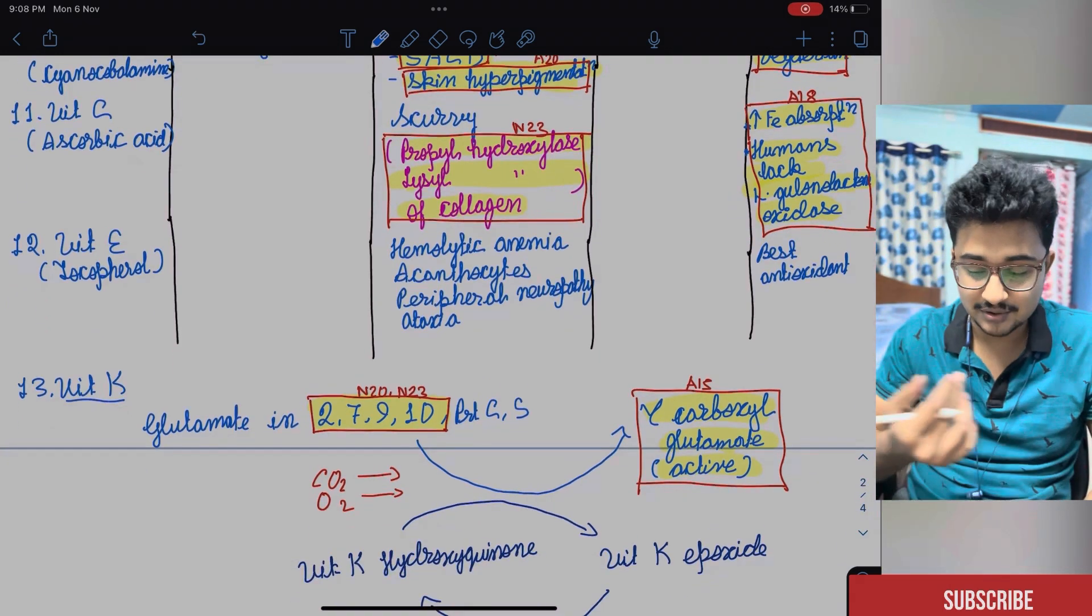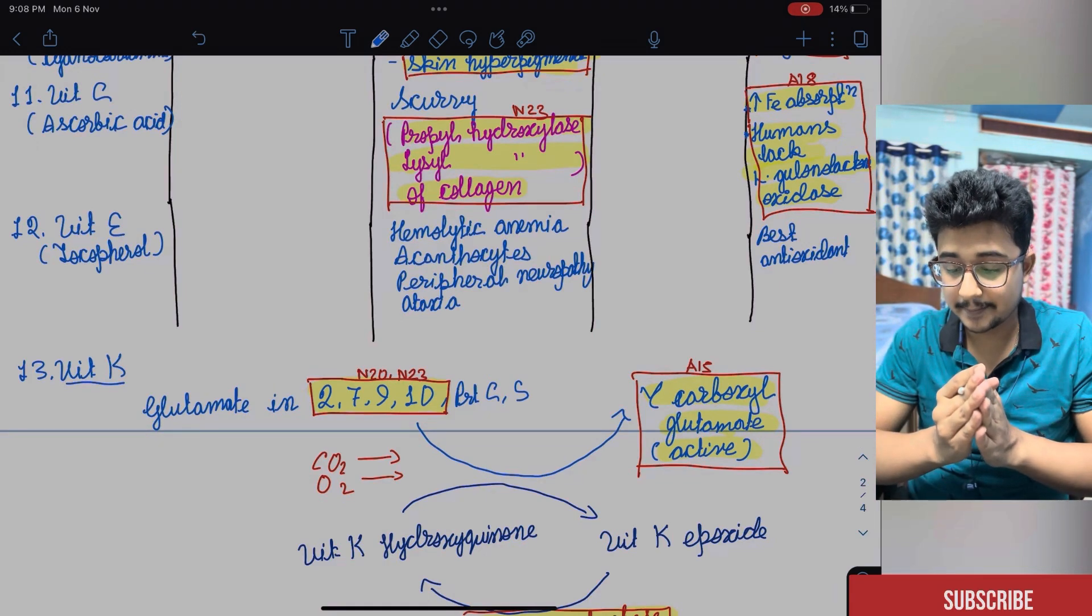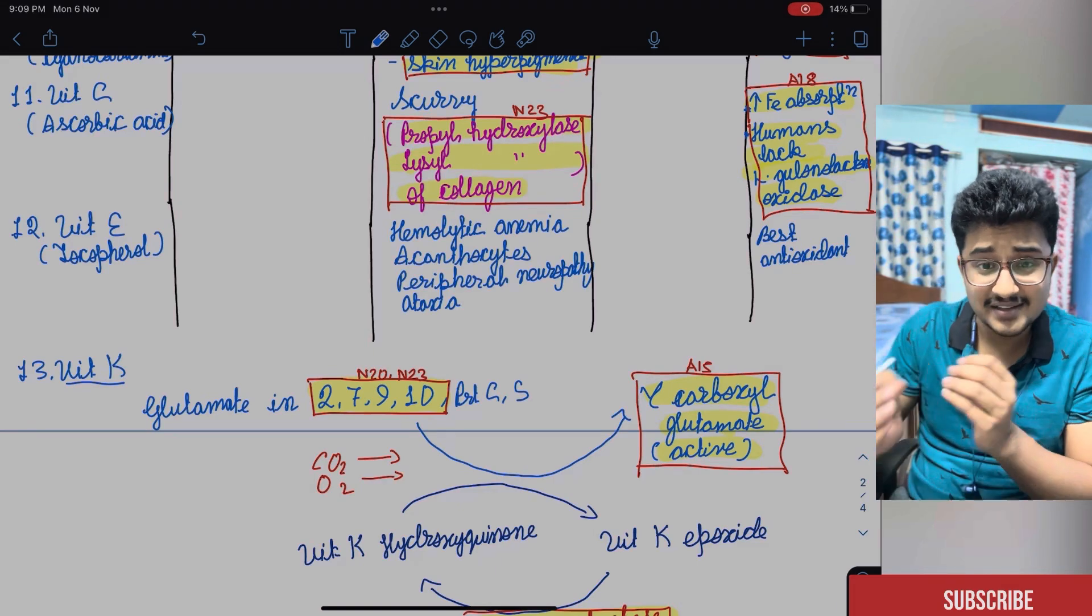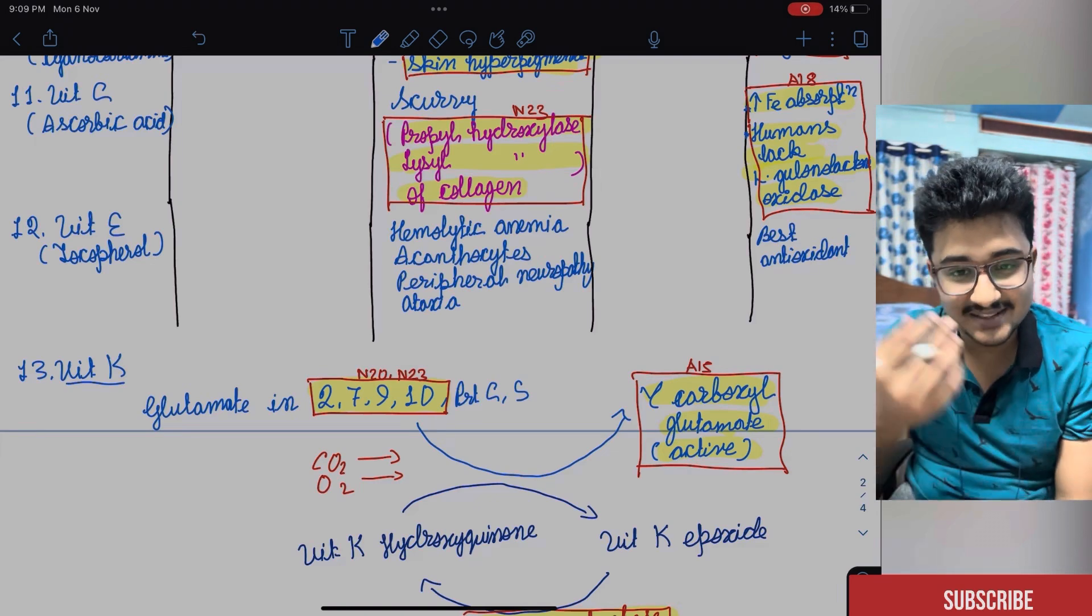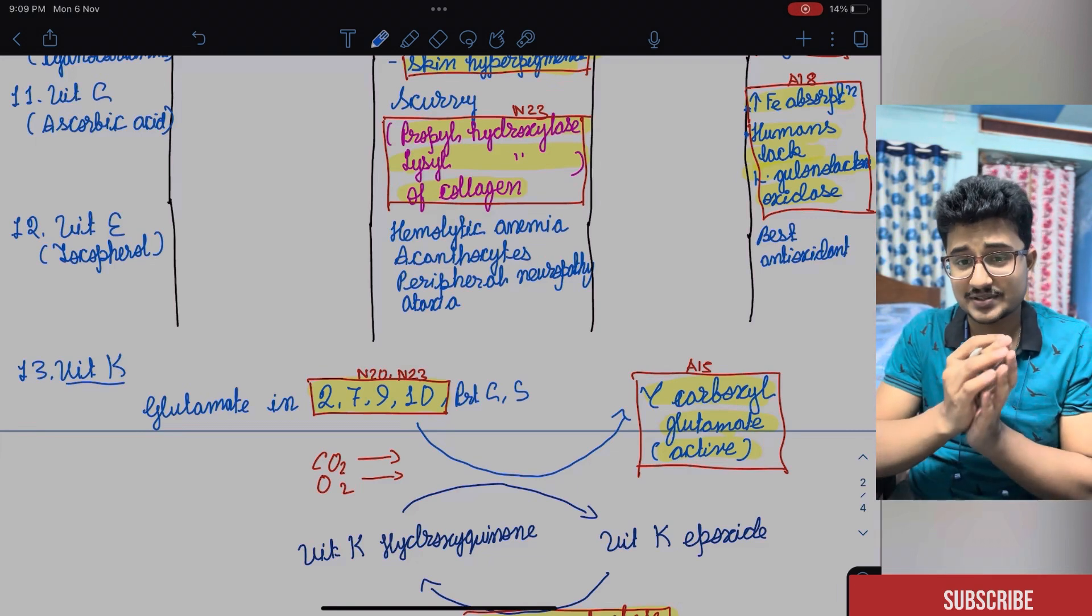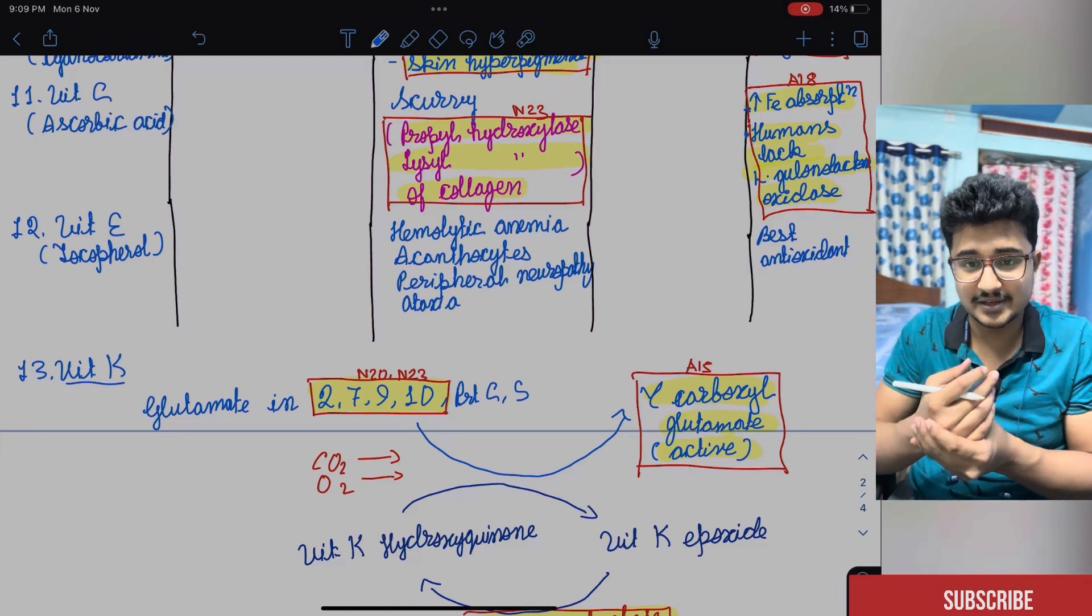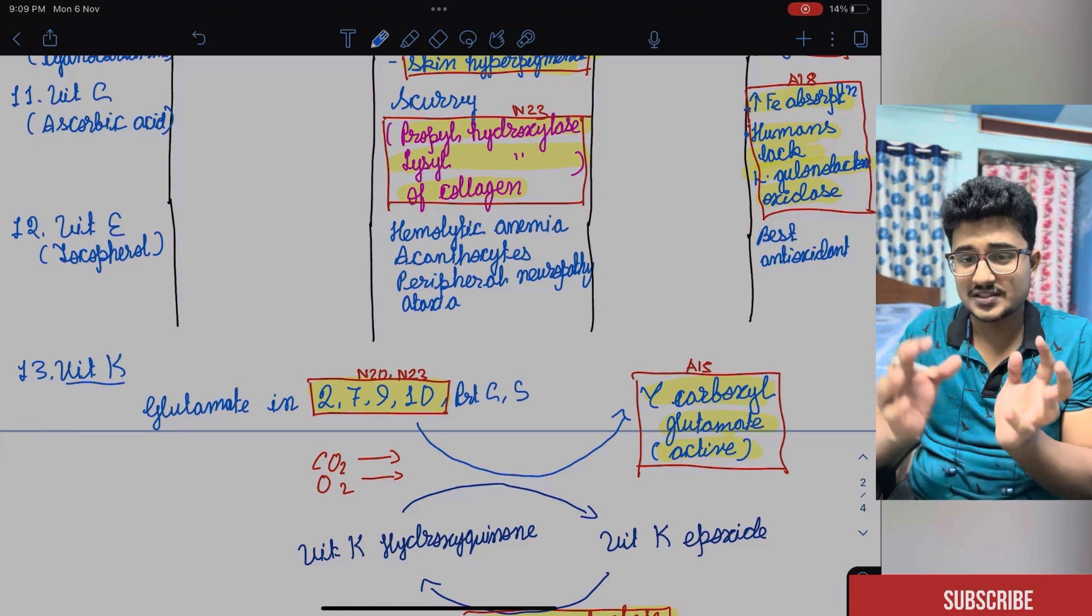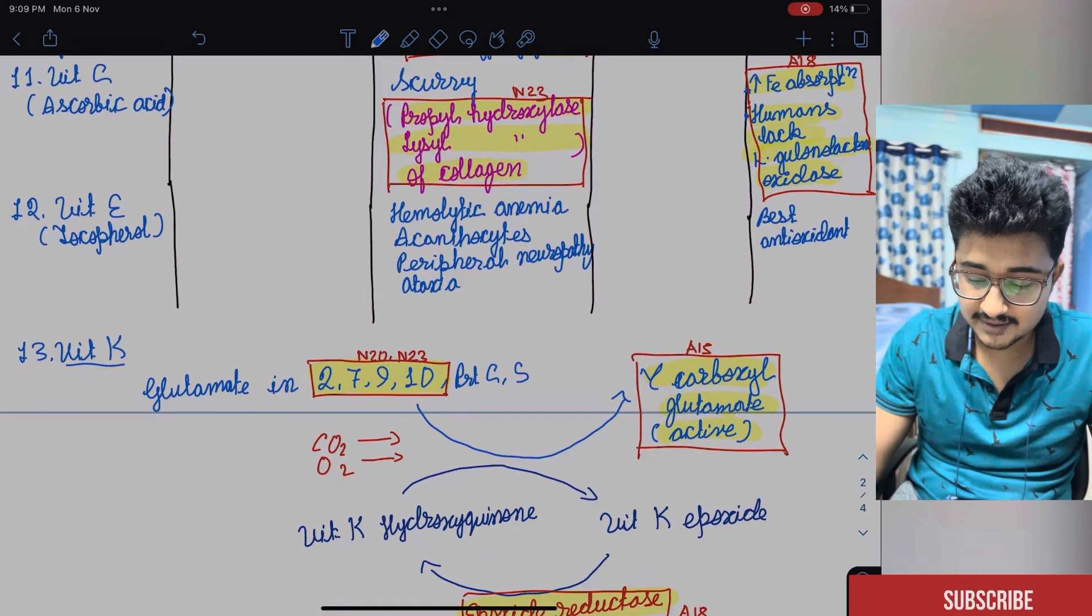Vitamin E after that is tocopherol. It is the best antioxidant. You should remember that and its deficiency causes hemolytic anemia, acanthocytosis, peripheral neuropathy, ataxia just similar to vitamin B12 only. But acanthocytes will be seen instead of megaloblasts. Why megaloblasts are seen? Because the DNA maturation does not take place because the dihydrofolate reductase is required and the DNA maturation did not take place and the nucleus becomes weak and so the megaloblasts are seen.